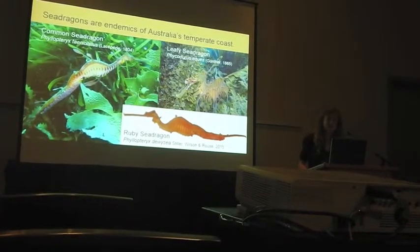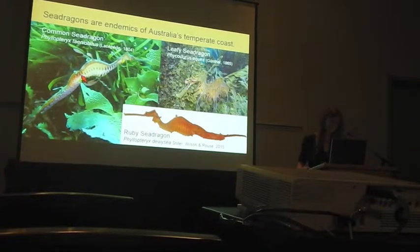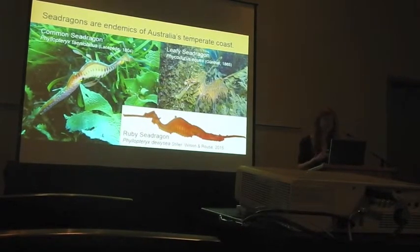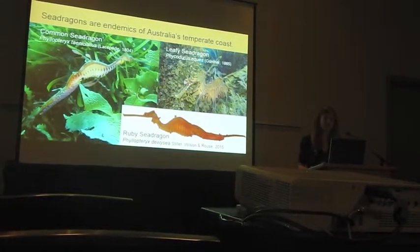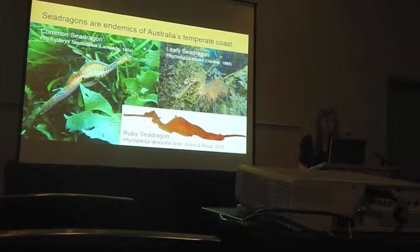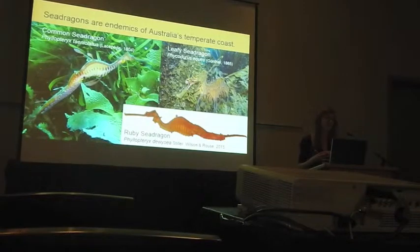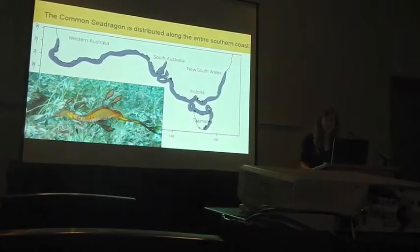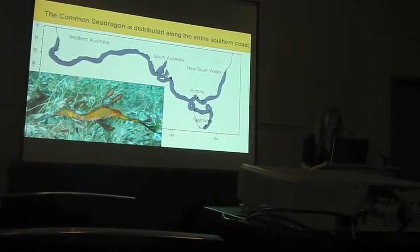Sea dragons are members of the fish group Syngnathidae, and they are all characterized by having elongate snouts and by males carrying the brood. We expect sea dragons to be highly structured across their range in Australia because a dispersed egg phase is missing and juveniles also seem to lack a pelagic dispersal phase. Observations tell us that adult sea dragons stay within very tightly defined home ranges and occur at very low densities. Today we are focusing on the common sea dragon, which has the widest distribution of all sea dragon species, covering the entire temperate coastline.